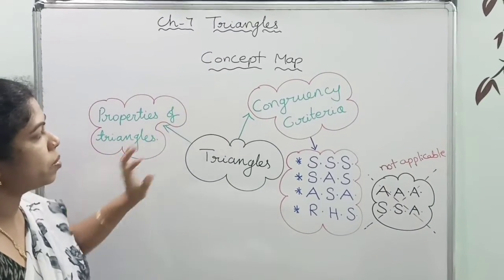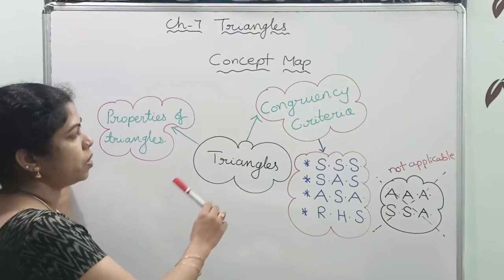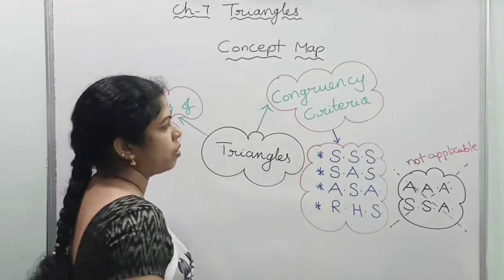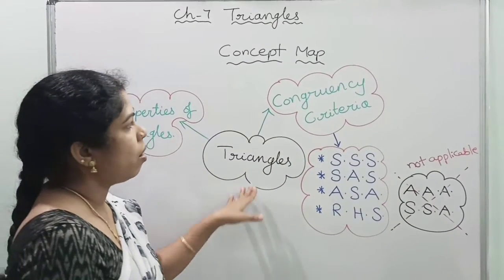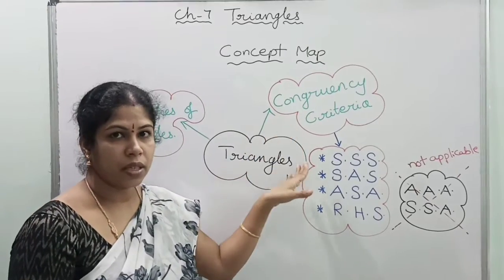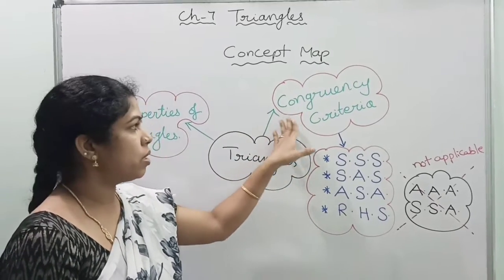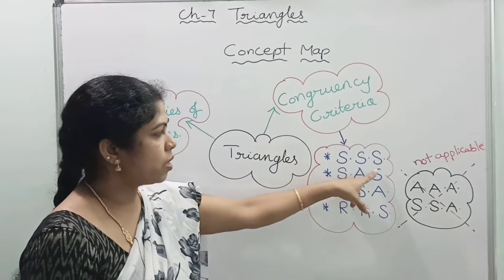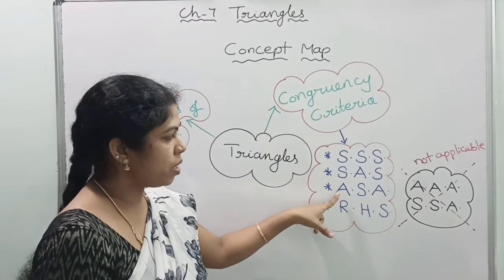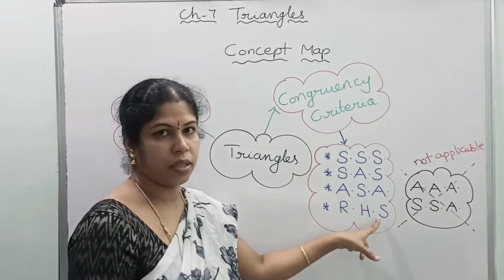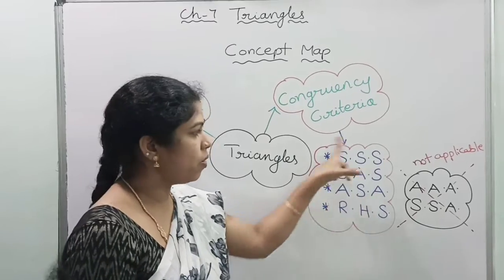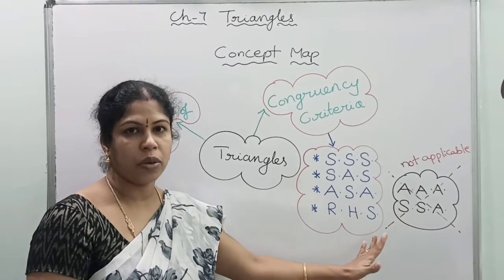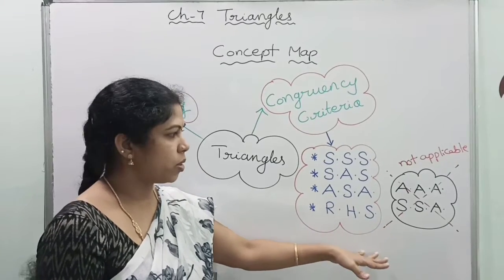If you observe the concept map, in this chapter we are going to discuss about the congruency criteria of triangles. Already in previous classes you have learnt congruency rules. Some of the congruency rules are SSS congruency, SAS congruency, ASA and RHS. This is all you have learnt in previous class, but by applying these we are going to solve some more problems.